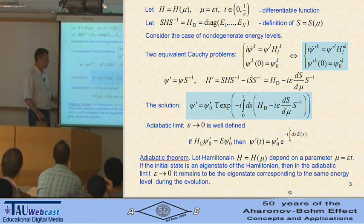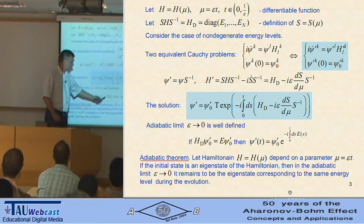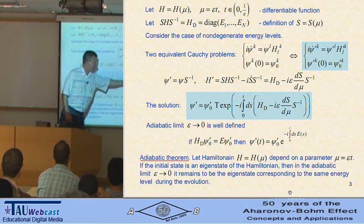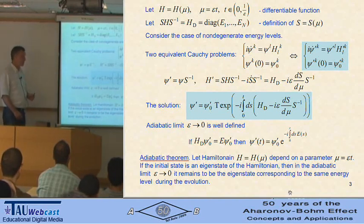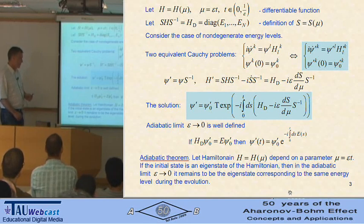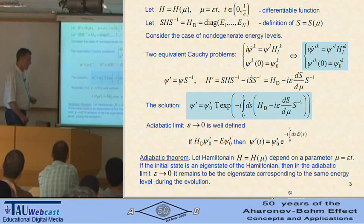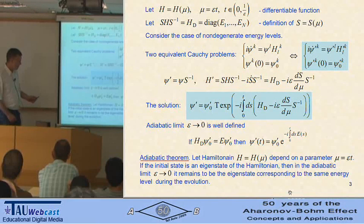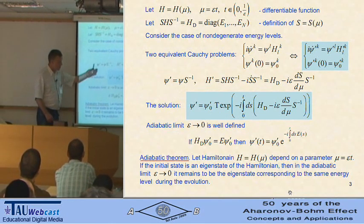Suppose that at the initial moment the vector was in some eigenstate with energy E. Then in the adiabatic limit, as epsilon goes to 0, this term can be dropped, and we see that this initial state acquires only a phase. This is the well-known adiabatic theorem: if the Hamiltonian depends on some parameter mu equal to epsilon times T, and if the initial state is an eigenstate of the Hamiltonian, then in the adiabatic limit it remains to be the eigenstate corresponding to the same energy level during the evolution. This is a very simple proof.